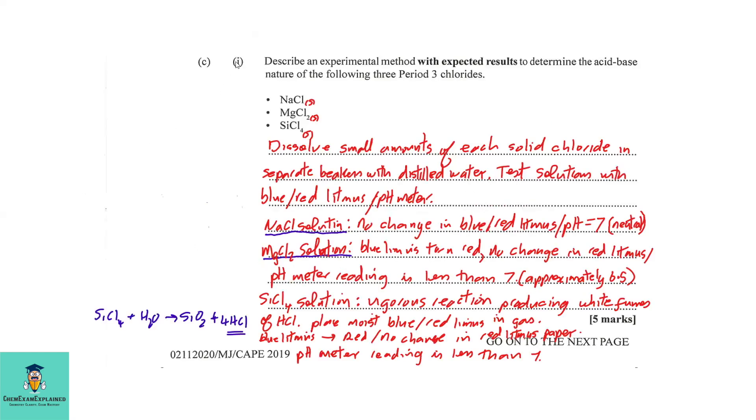Part C, 1: Describe an experimental method with expected results to determine the acid-base nature of the following three period 3 chlorides. So we will dissolve small amounts of each of the solids in separate beakers with distilled water. We are then going to test the solutions using blue and red litmus paper, or you could use the pH meter to test the pH of the solutions. For sodium chloride, using blue and red litmus paper, we will observe no change in the color since the pH of the sodium chloride solution is neutral.